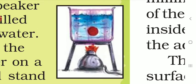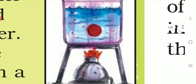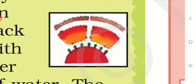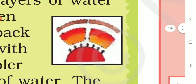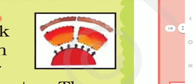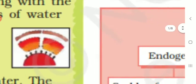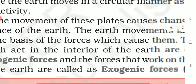Why is this happening? This is because of the movement of the water in a circular manner inside the beaker. In the same way, the molten magma is also moving inside the earth in a circular manner, and due to this the lithospheric plates are also continuously moving. These lithospheric plates are broken at various places and therefore continuously moving, causing changes on the surface of the earth.